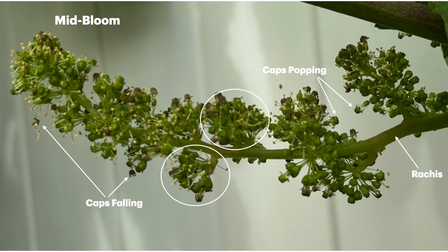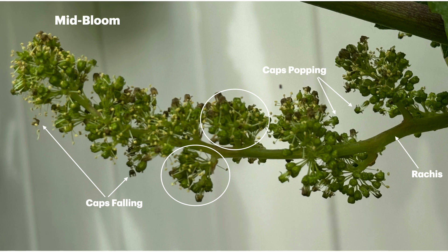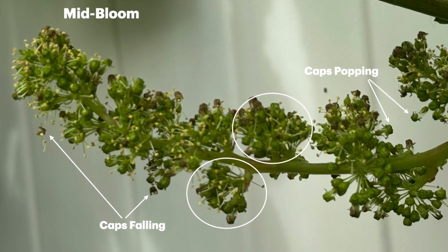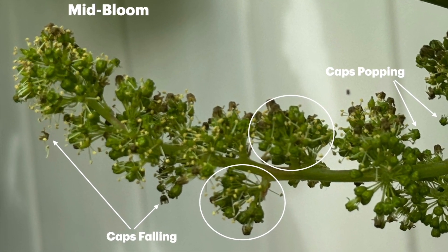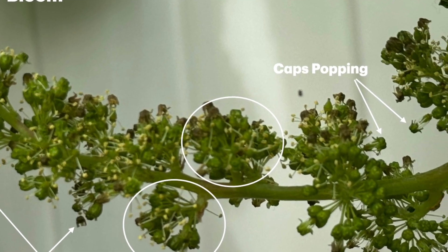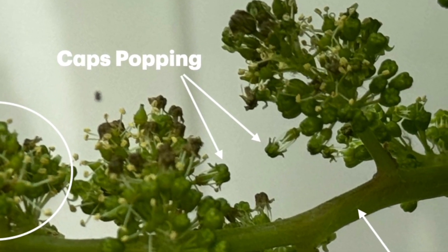Bloom is usually regarded as when 50% of the caps off of the flowers fall off from the cluster. And here in this picture, you can see that the caps are falling off or being pushed off as the stamens extend outward, pushing the caps off and then they fall.